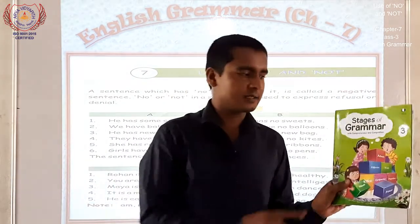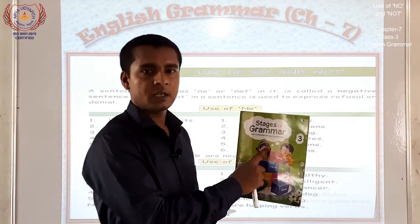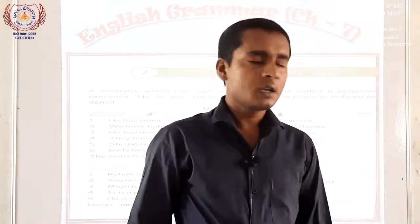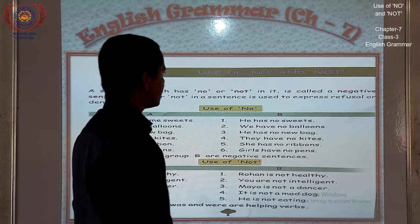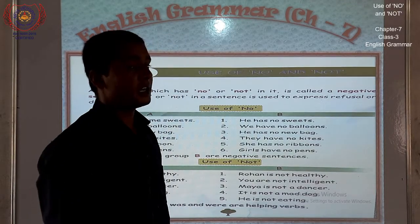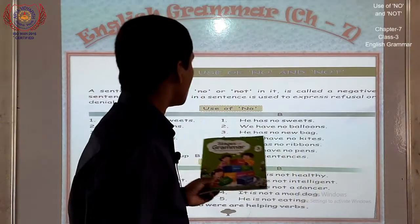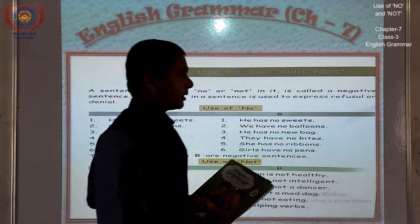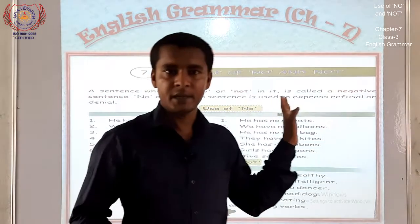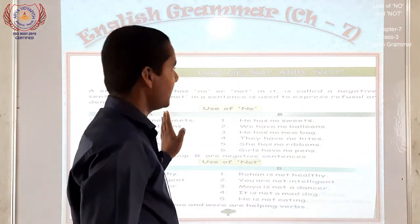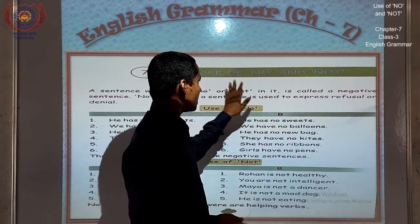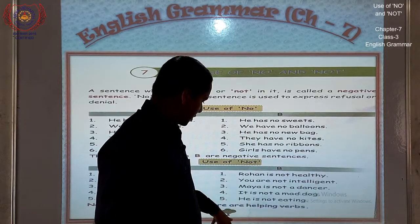Those who have this English grammar book, please take out this book and be ready to read chapter number 7. In chapter number 7, use of no and not. What is the use of no and not? In page number 24, this chapter has been given. This chapter is the 7th number chapter — use of no and not, on page 24.